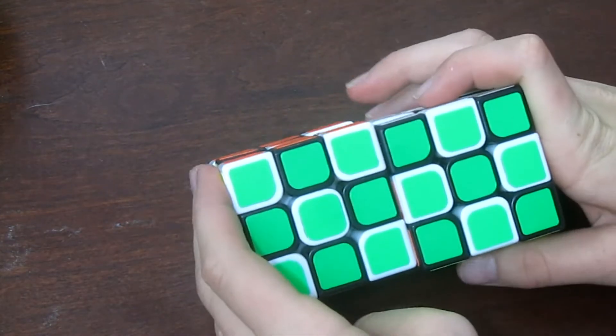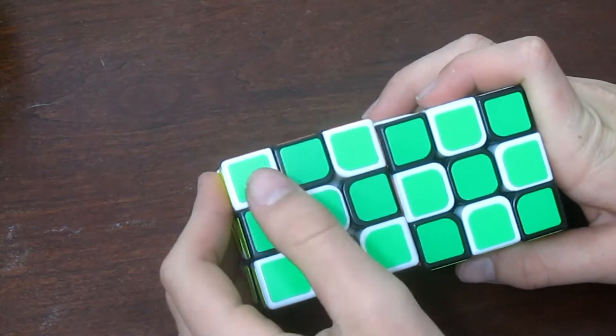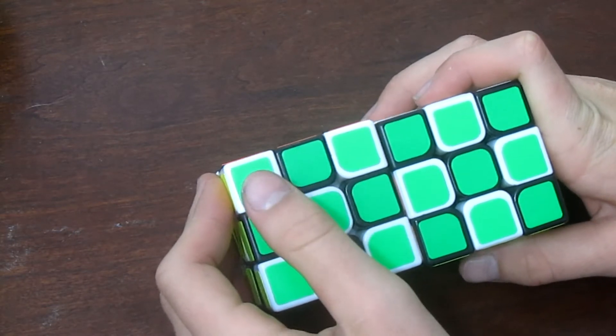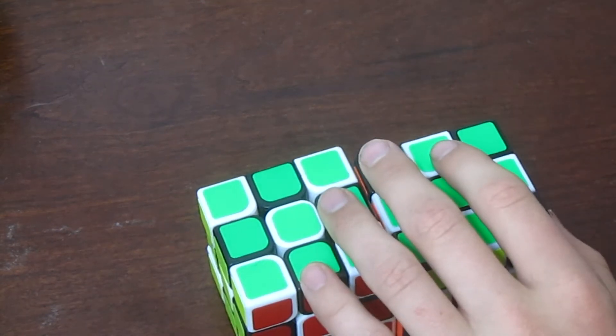Now the weird thing is these greens right here. You can see that the greens on the black cube, they look slightly darker. That's probably just shadow effect or something like that.